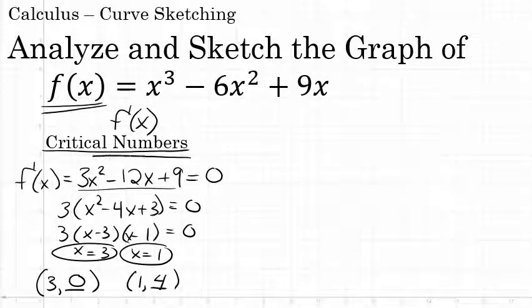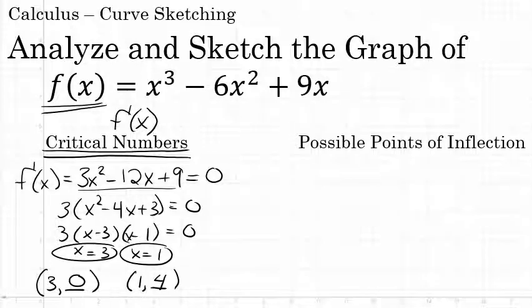Again, step one is to find the critical numbers. In this case the critical numbers were 3 and 1. I substituted those x values back into the original function to get two points on this graph — (1, 4) and (3, 0) — and these two points could be extreme values.